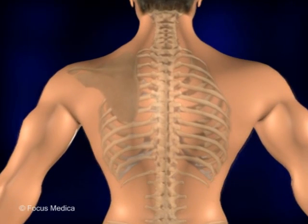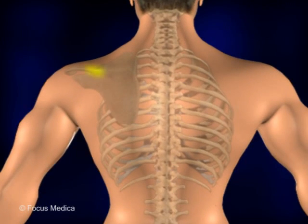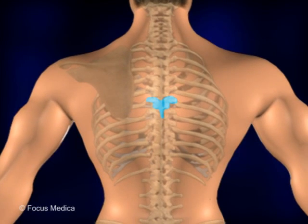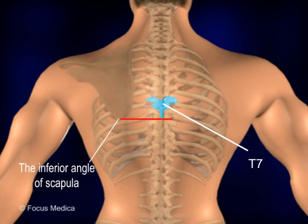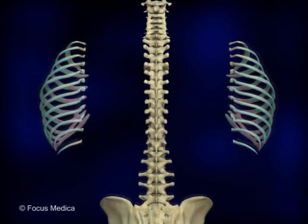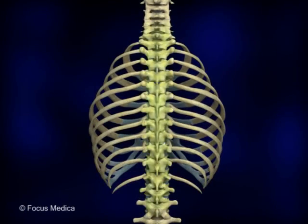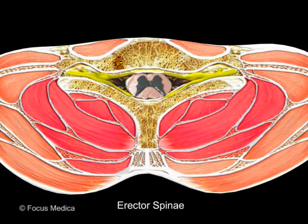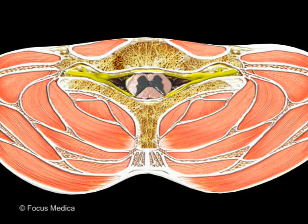The spine of the scapula is in level with the T3 spine. The inferior angle of the scapula is in level with the T7 spine. Ribs are additional bony landmarks on either sides of the spine in the thoracic area and may be covered by the erector spinae on either sides of the midline.